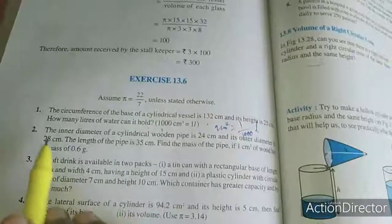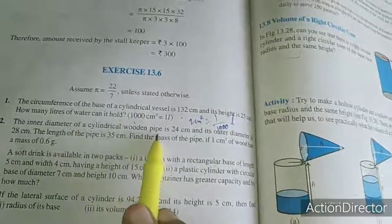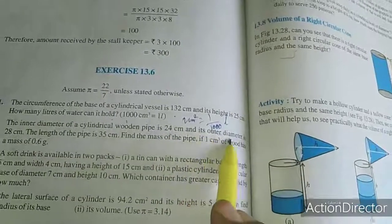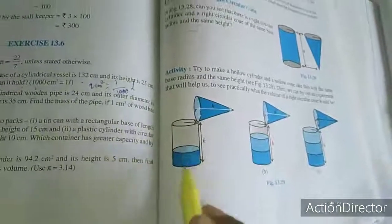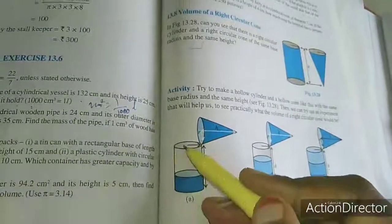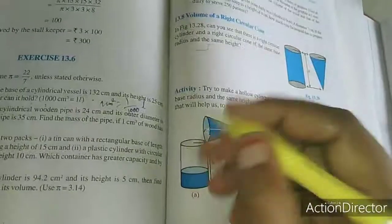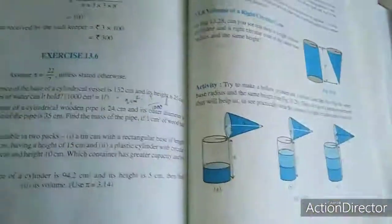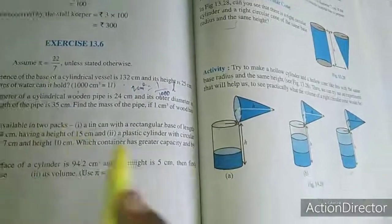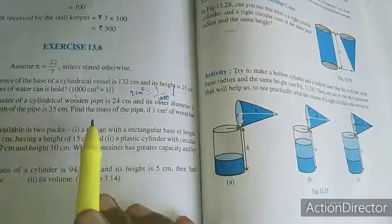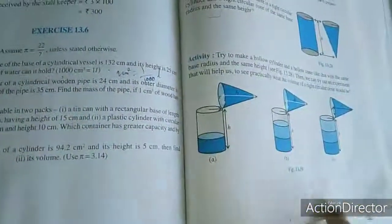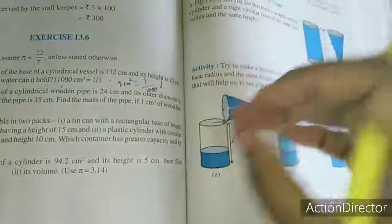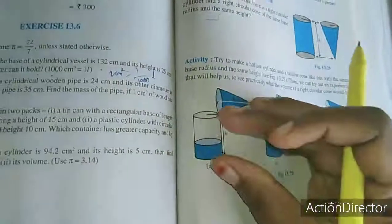Second problem: the inner diameter of a cylindrical wooden pipe is 24 centimeter and its outer diameter is 28 centimeter. The length of the pipe is 35 centimeter.